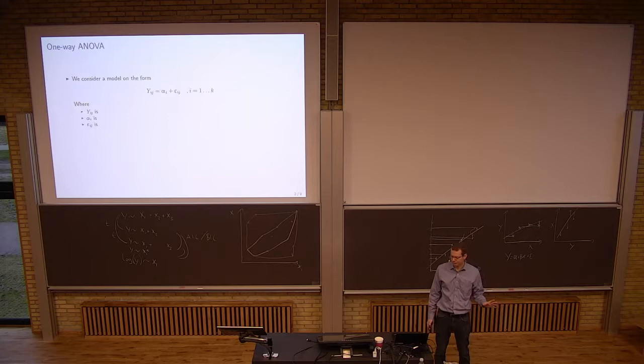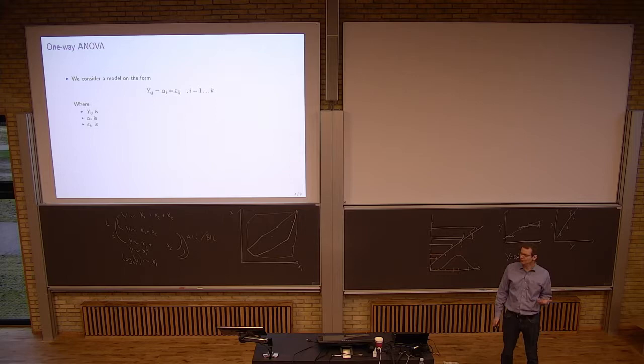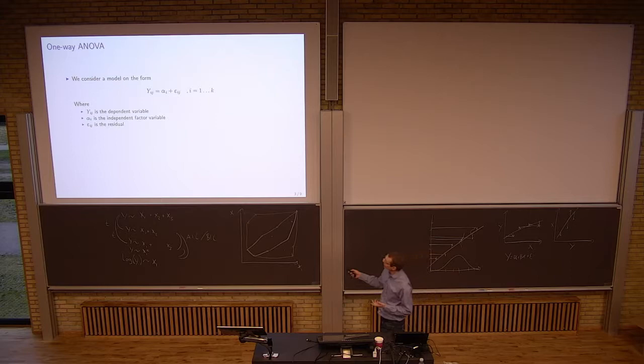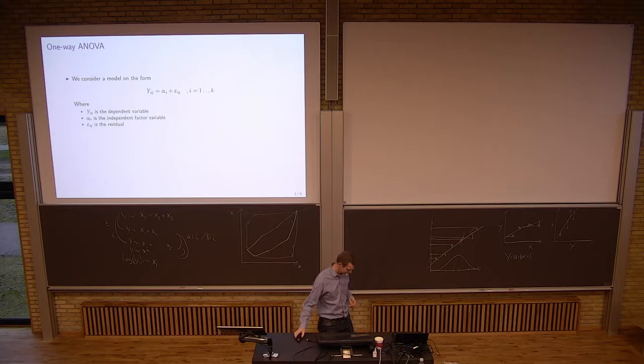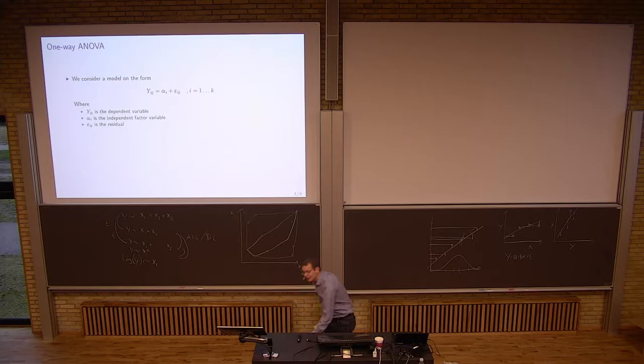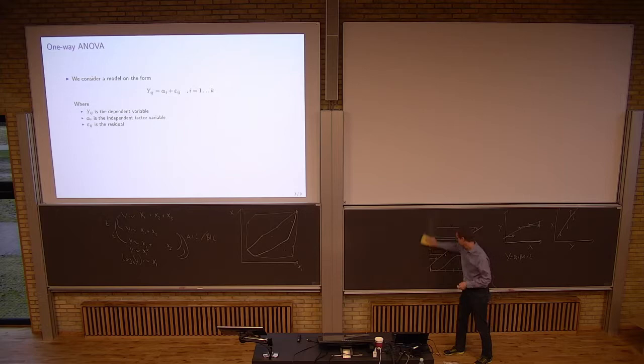Basically the model is yet again a regression model where you have a dependent variable and then you have an independent variable that is a factor variable, and then you have the residuals. Now how is this different from a linear regression model? Or how is this actually the same as a linear regression model?